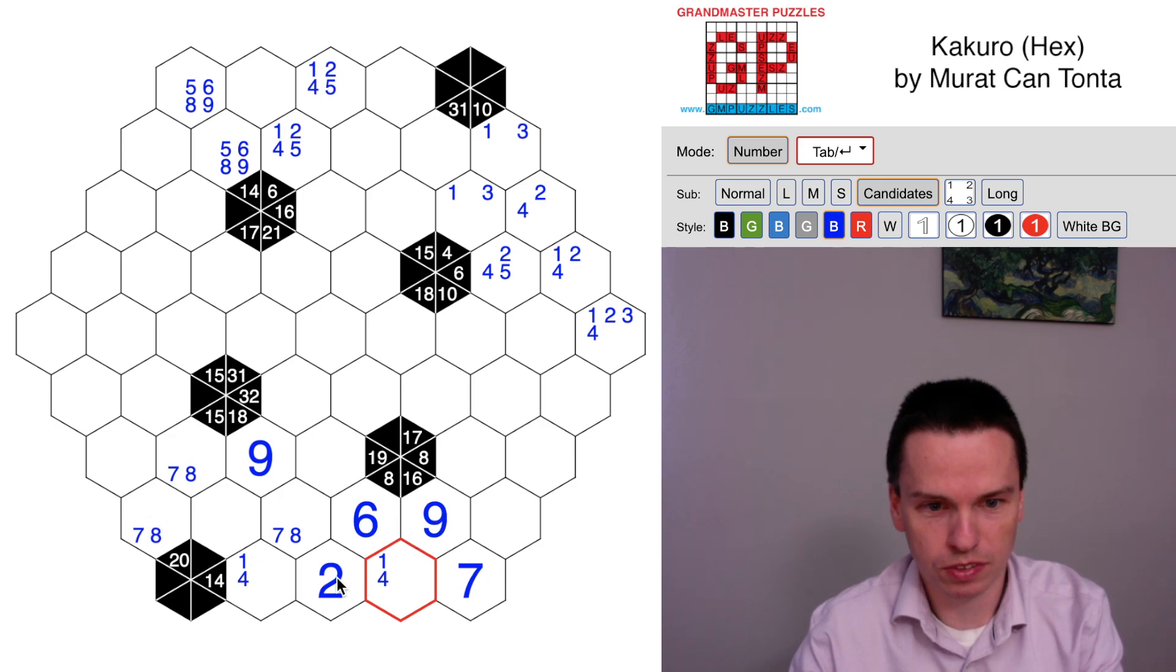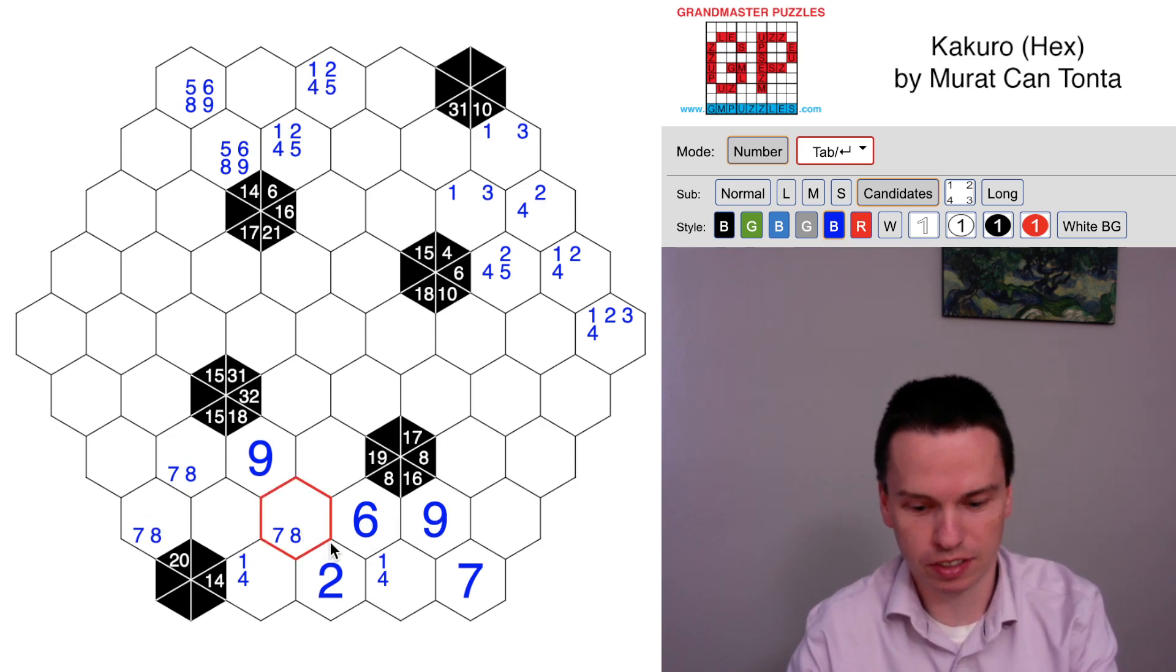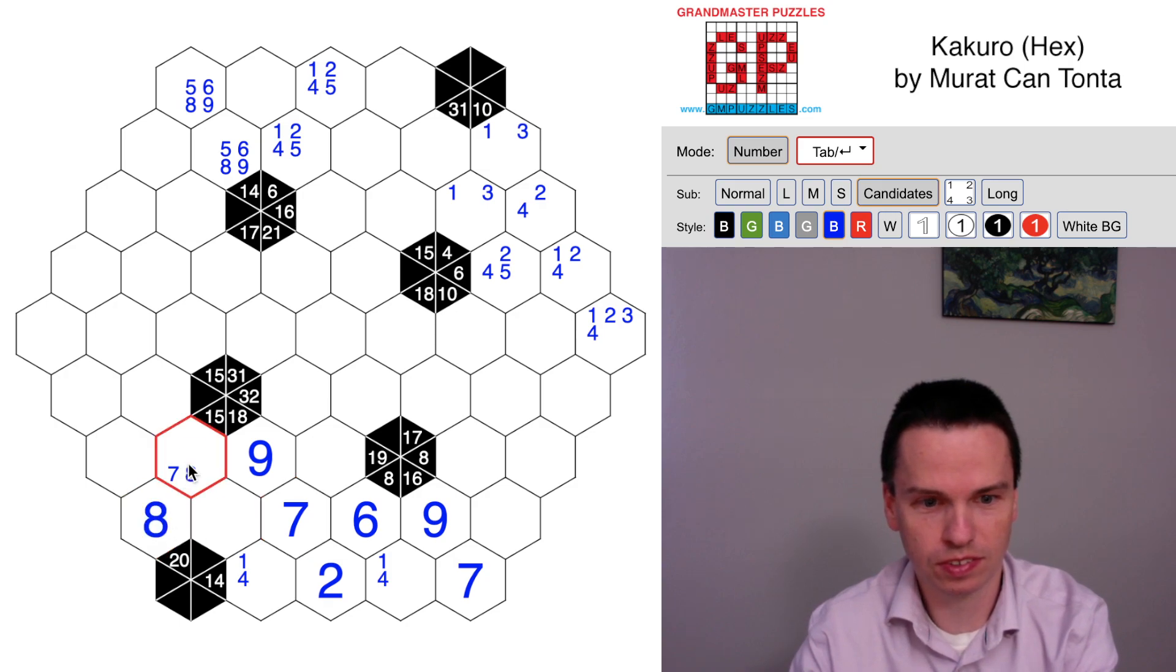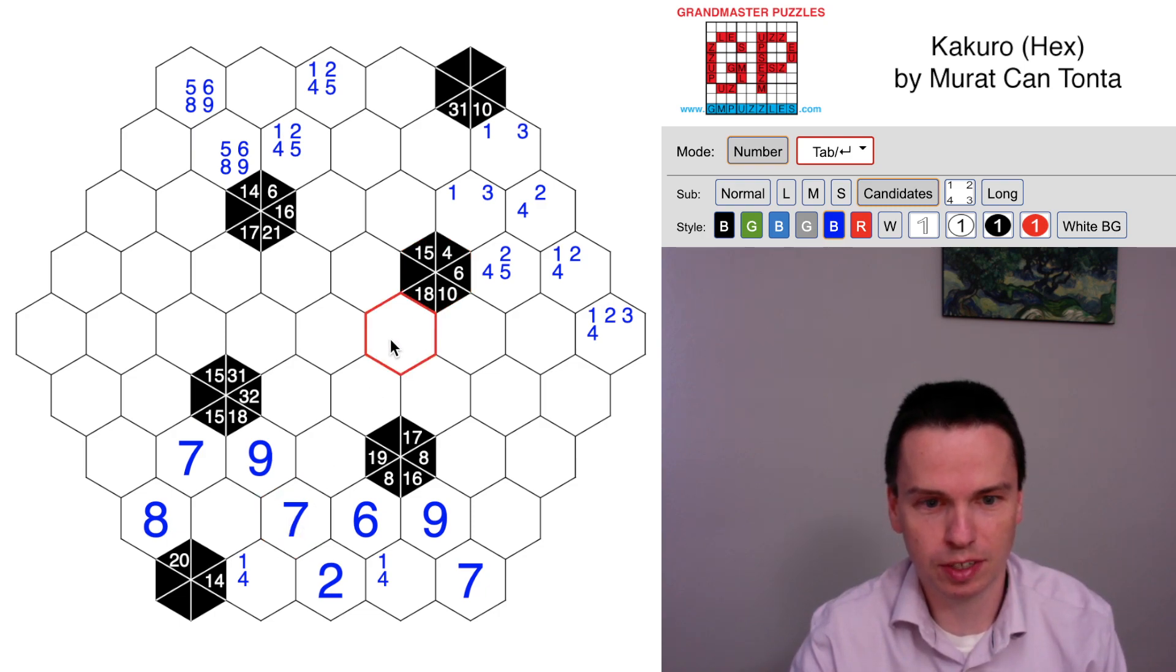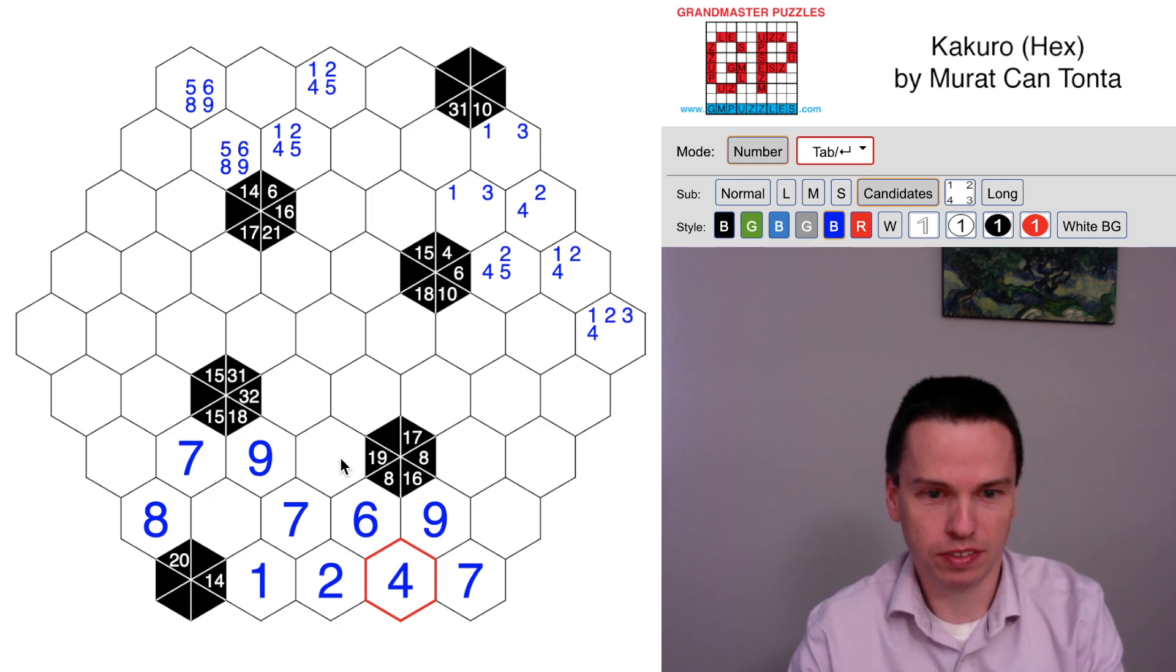This 2 actually finishes this set. So we get the 7 placed, the 8, 7 placed. This 7 is part of an 18 sum. We've got 11 to go in 4 cells. That's 1 and 2 and 3 and 5, so it skips over the digit 4.